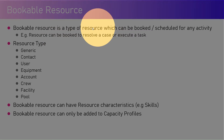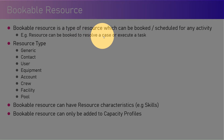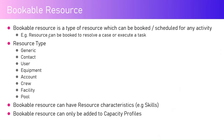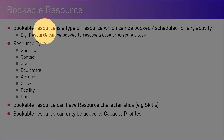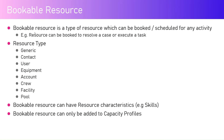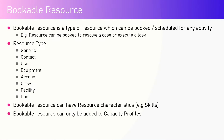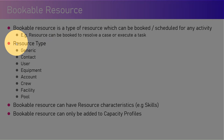What is a bookable resource? A bookable resource is a type of resource which can be booked or scheduled for any activity. For example, a resource can be booked to resolve a case or execute a task. This person can be a bot as well, so it can be a machine, or it can be an equipment — like a crane for heavy lifting — or a crew or group of users, or a pool of resources, or even a facility like a wide arena to hold a conference. All these human and non-human tangible resources are bookable resources.